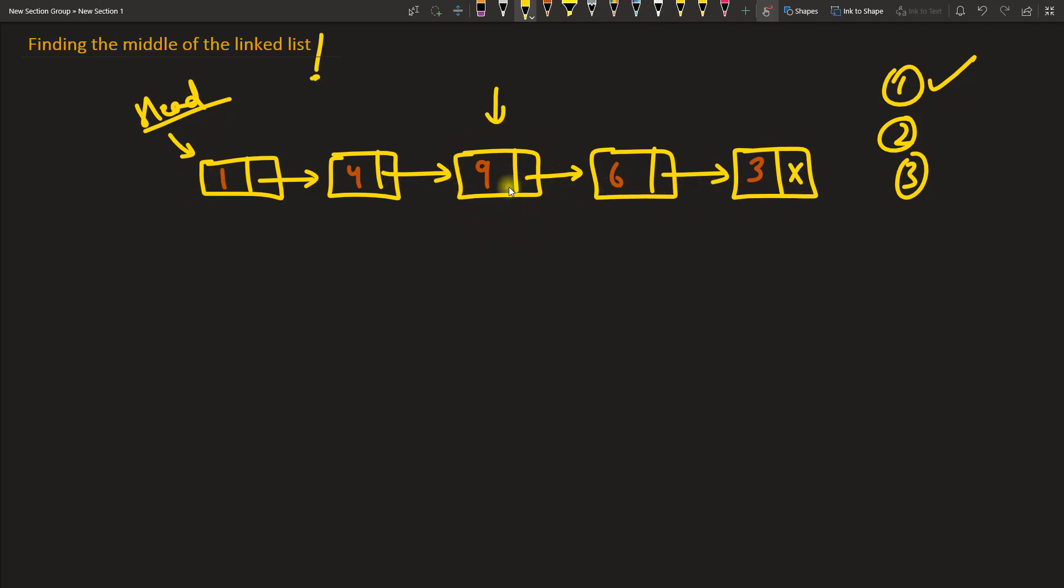Second one is you have two pointers, p1 and p2. This is going to be the fast pointer and this is the slow pointer. So if this is fast, in one iteration this guy would jump, meaning it will skip one. Let's suppose if this is one iteration...